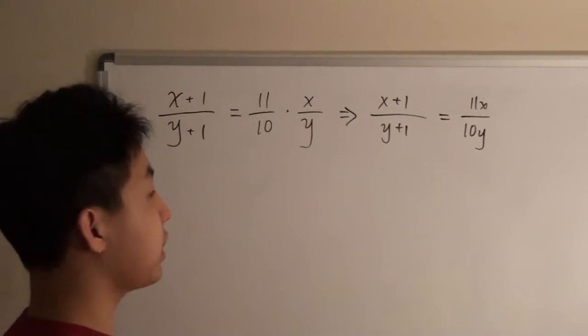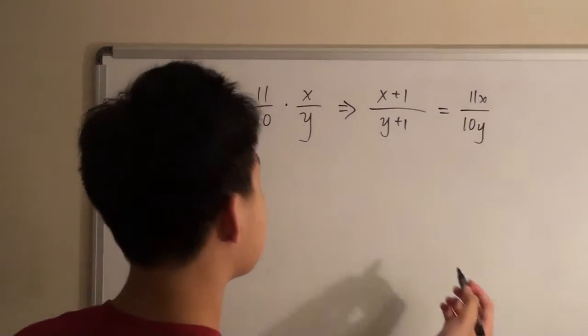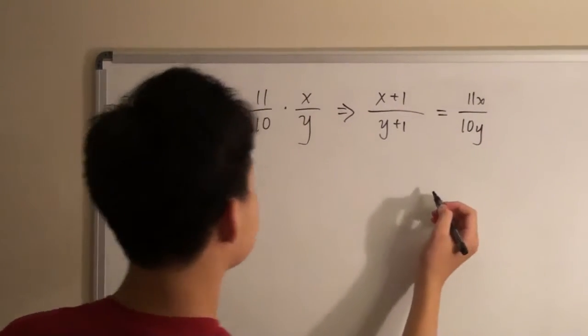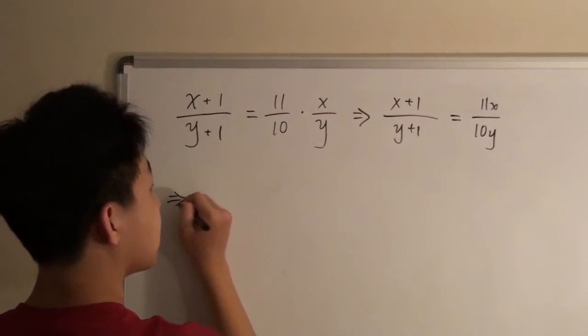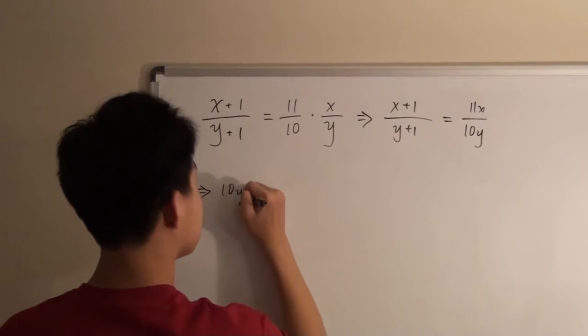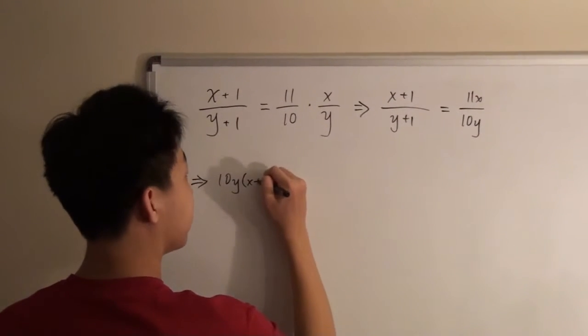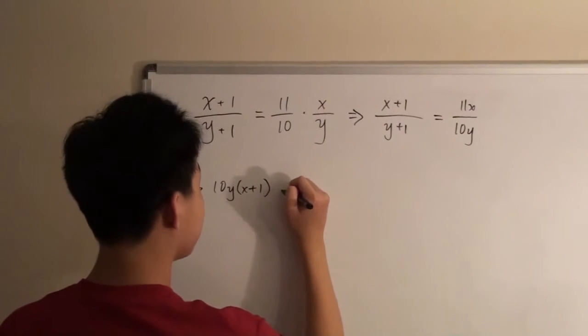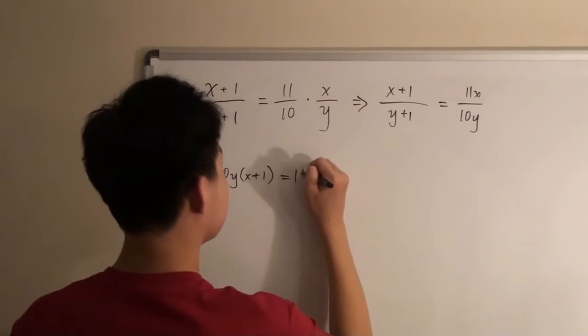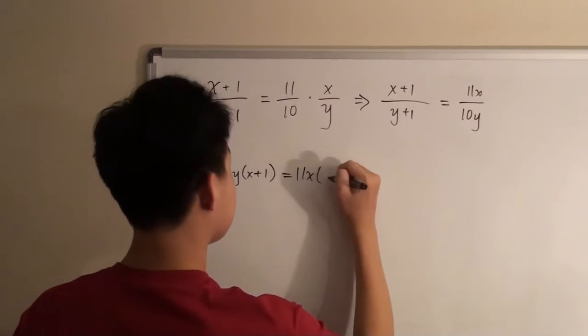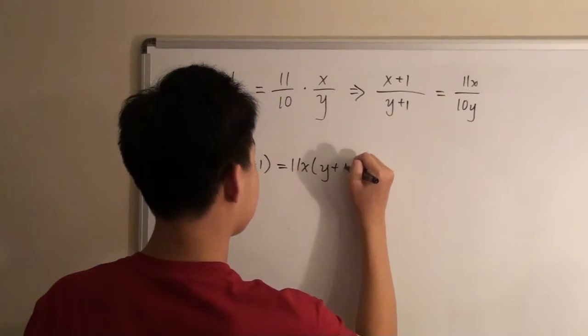Now we can cross multiply and then combine like terms. So in doing so, we get 10y times x plus 1 is equal to 11x times y plus 1.